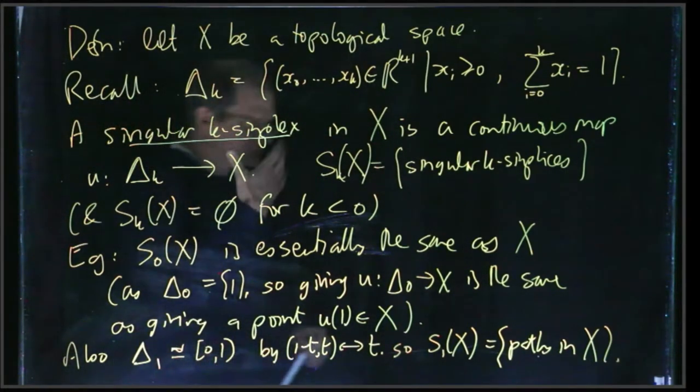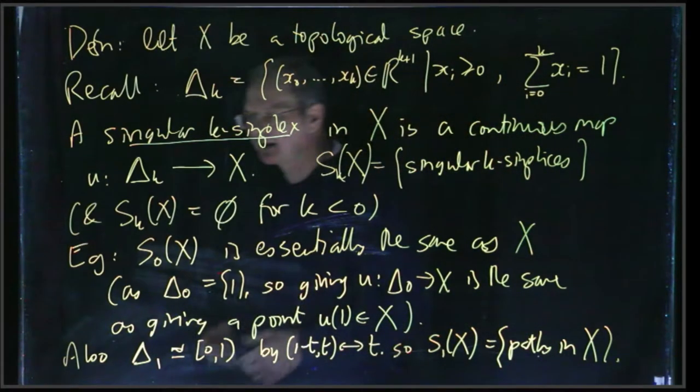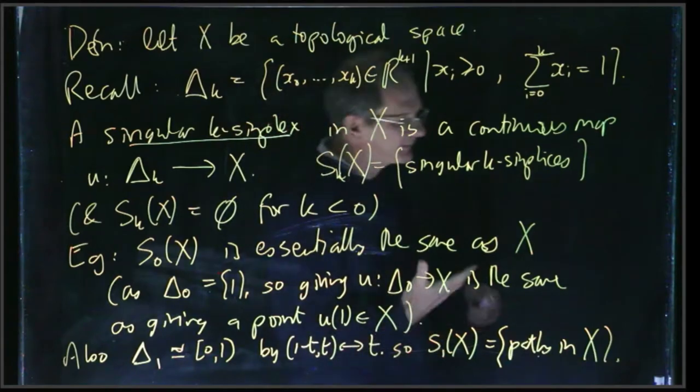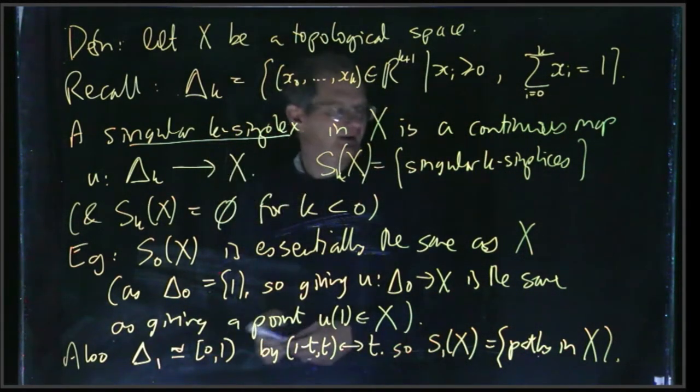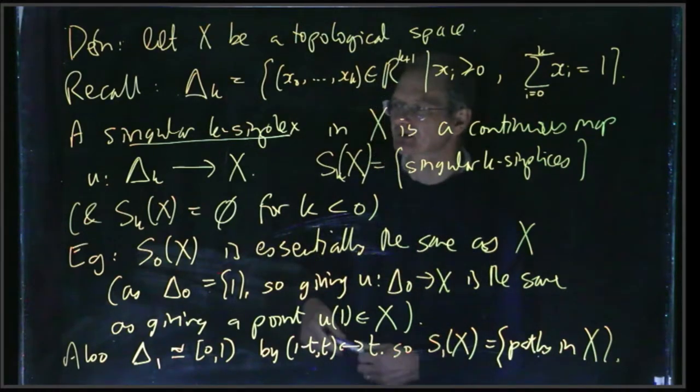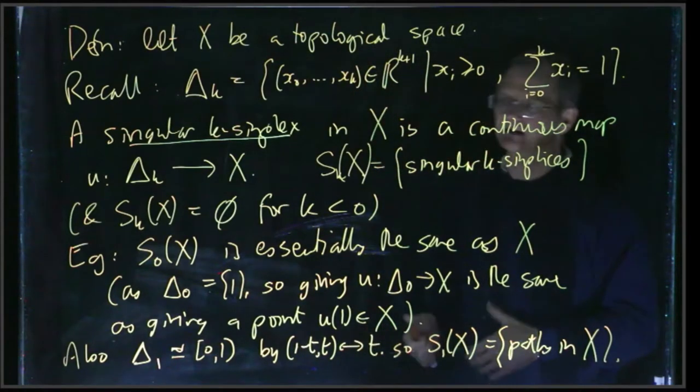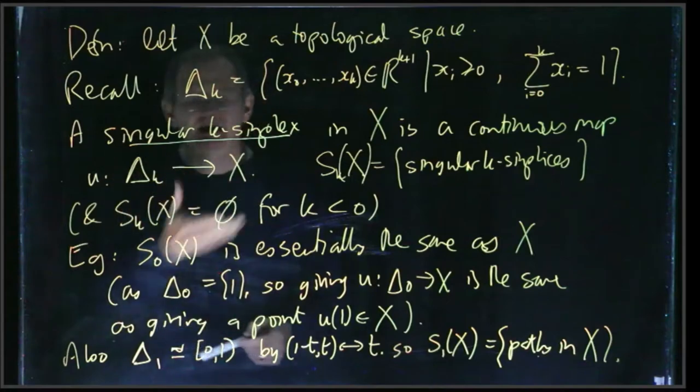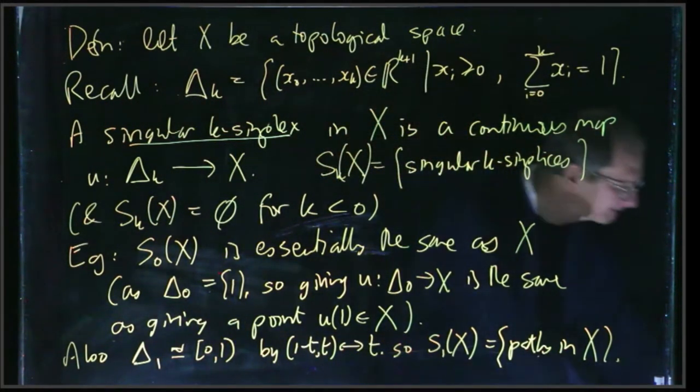And what's a 2-simplex? Well, you might sort of say Δ₂ is just a triangle, so you can say a 2-simplex is like a triangle in X. Of course, that's kind of a little bit misleading because you've got a continuous map from the triangle to X - it can be a rather strange continuous map, it doesn't need to be injective, the image of Δ₂ doesn't always look anything like a triangle, but still, in some sense, S₂(X) is the set of triangles in X.